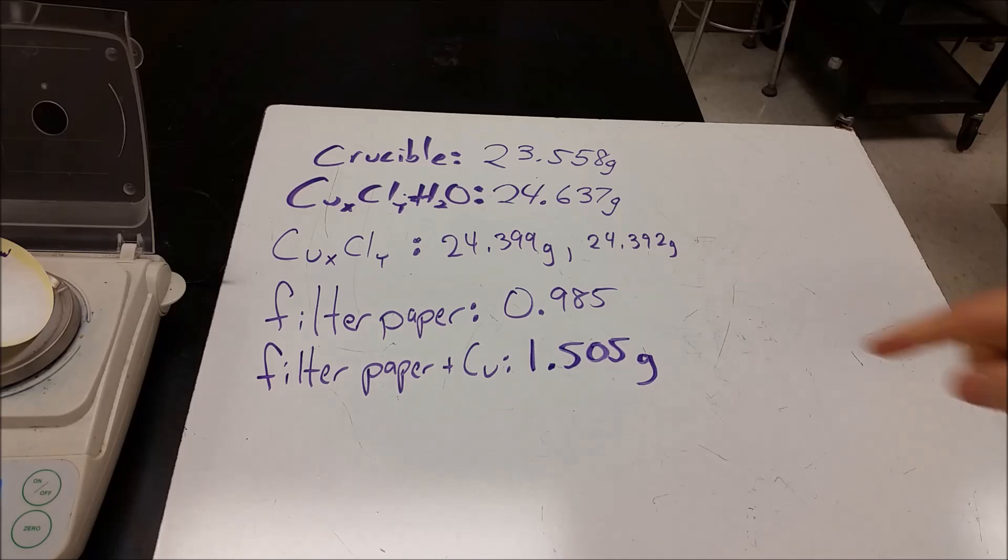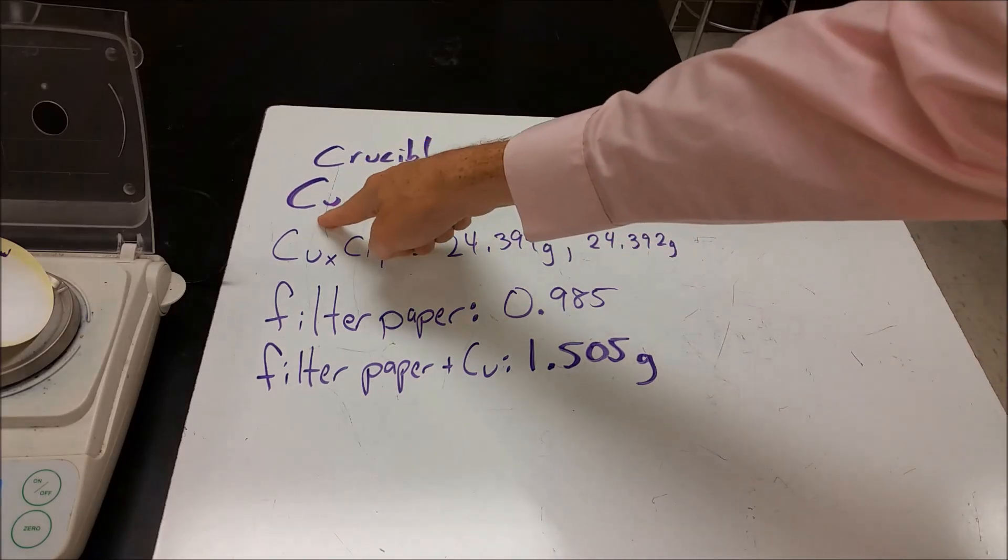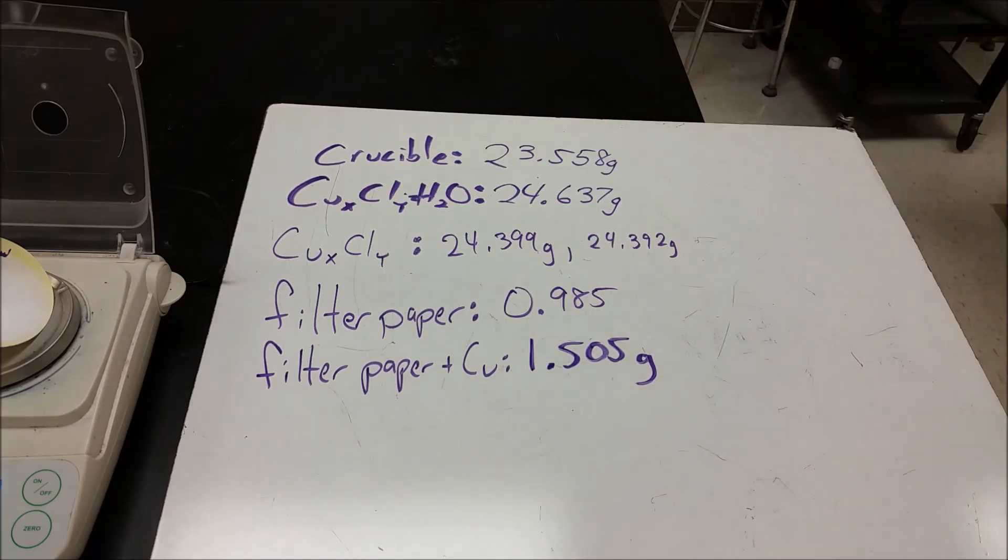So we now have enough information to figure out how many grams of water and therefore how many moles, how many grams of copper and therefore how many moles, and how many grams of chloride and how many moles. And we can therefore figure out our formula as the ratio of those moles.